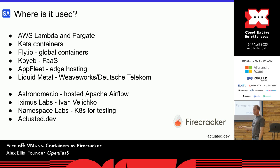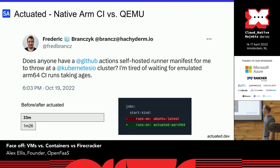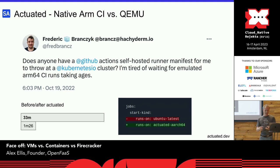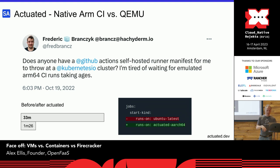I've been creating a product called Actuated, trying to help people with GitHub Actions and CI. Frederick from Berlin has an open-source project called Parker. He just wanted to build his code on ARM and run Go unit tests — nothing special — but it took 33 minutes on a hosted runner. On his laptop it was about a minute. I changed the runs-on label to launch a Firecracker VM on a real ARM machine, and it was a 22x improvement. That's something we keep hearing.